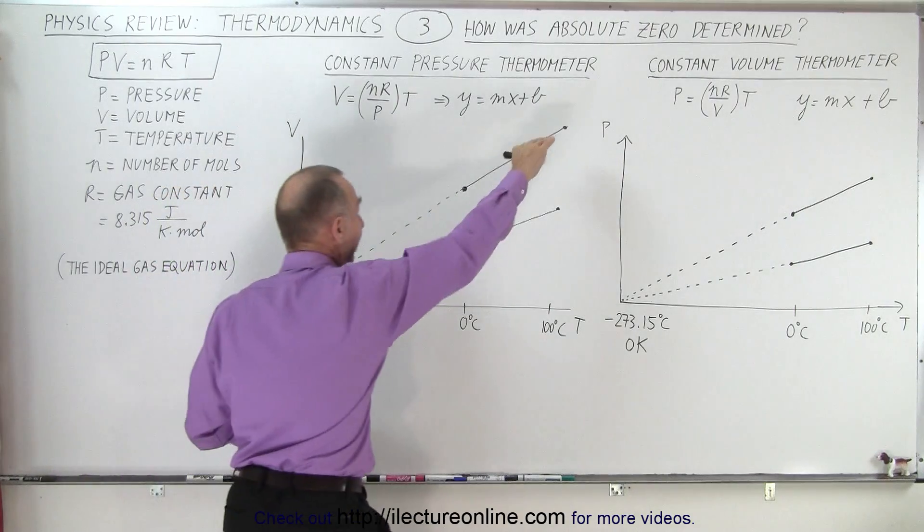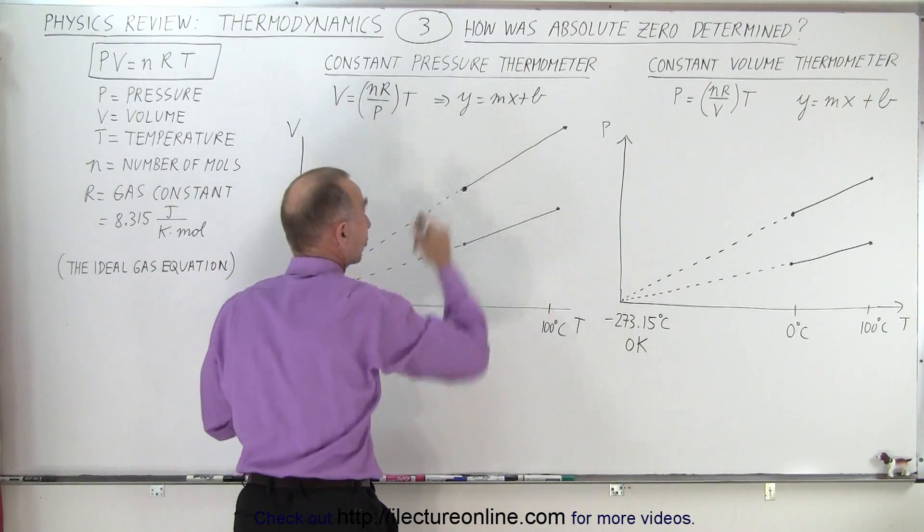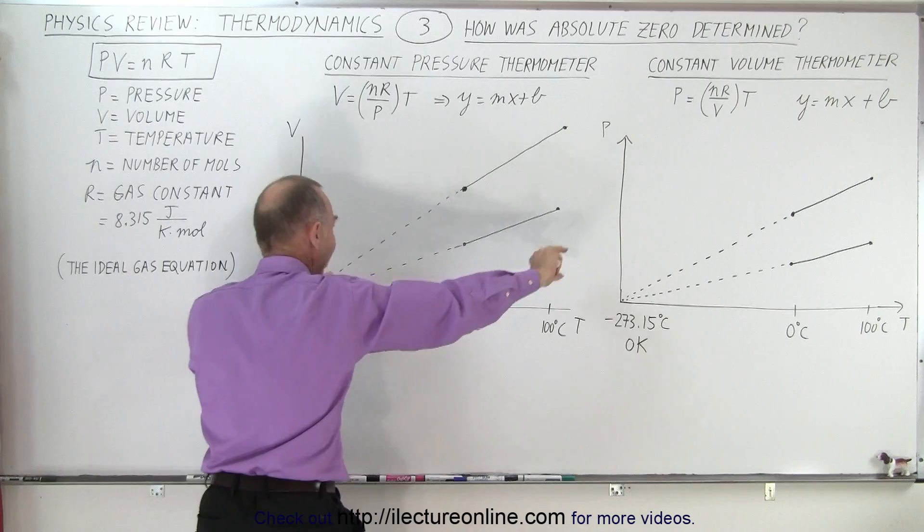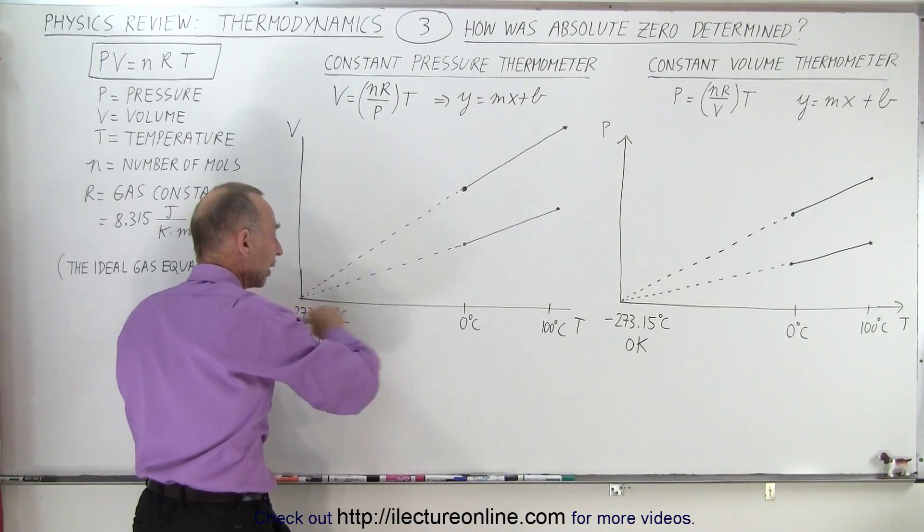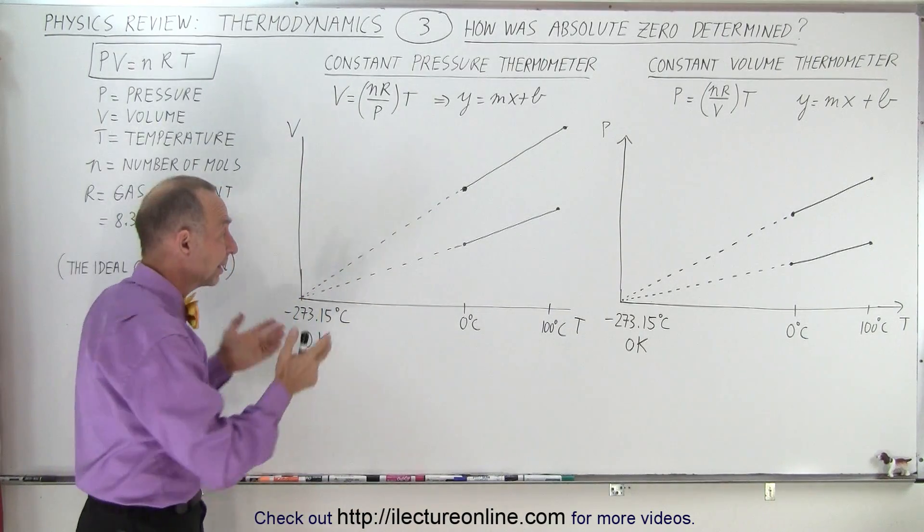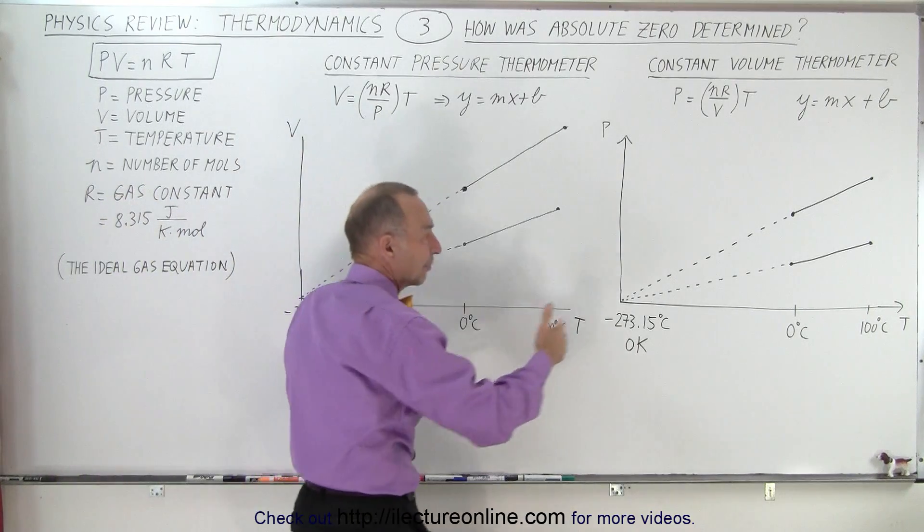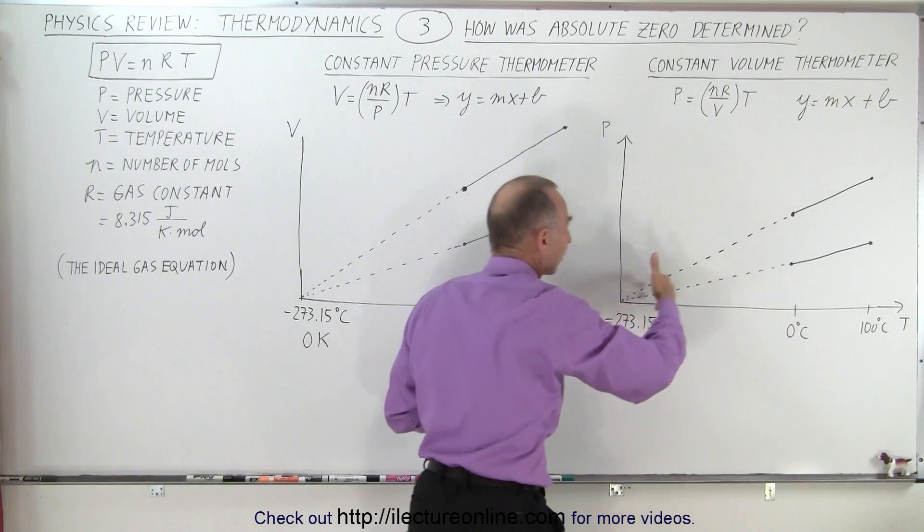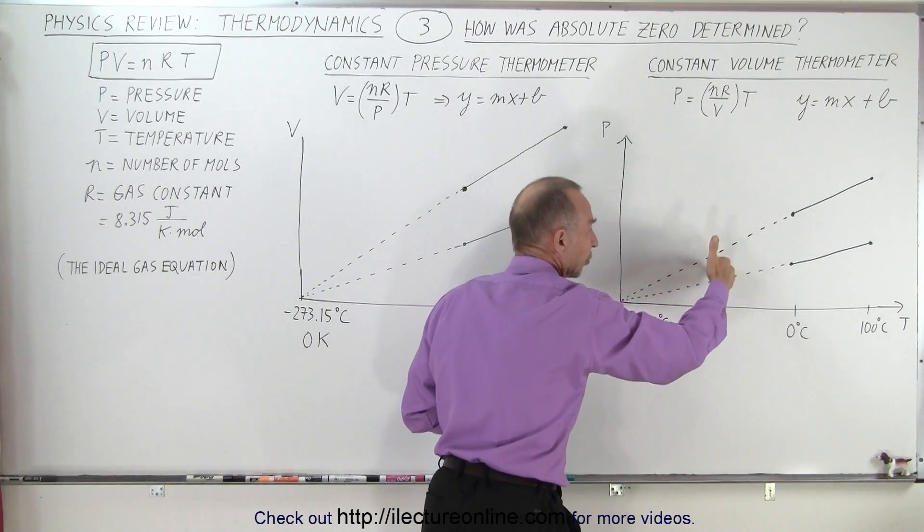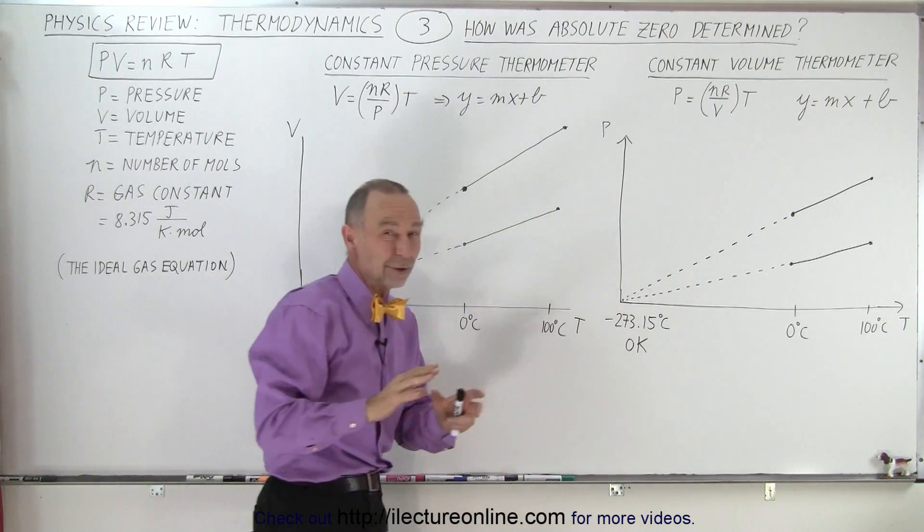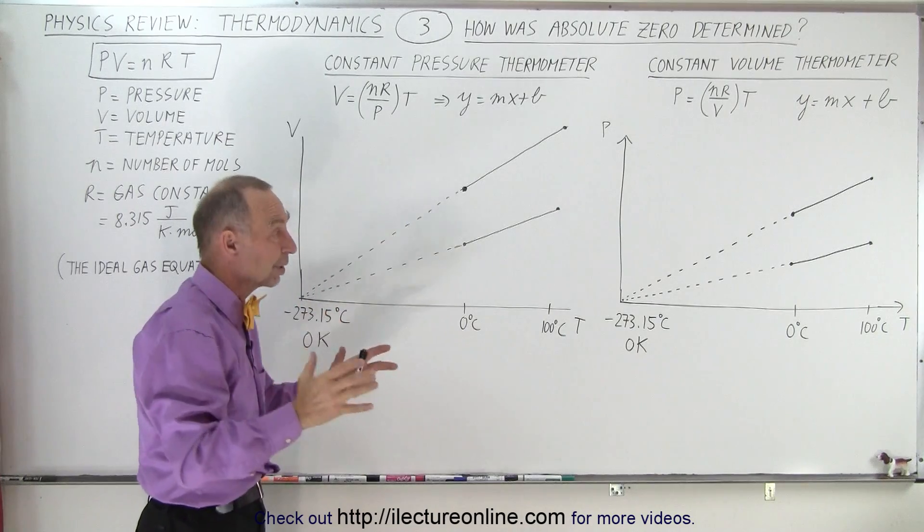And then if we extrapolate these curves out, since they're simply straight lines, we notice that all these lines converge to a single point on the horizontal temperature scale. That single point represents 0 Kelvin, because obviously we can't have a gas go all the way down to zero, because the gas would condense into a liquid and then turn into a solid, so it wouldn't actually work in real life.